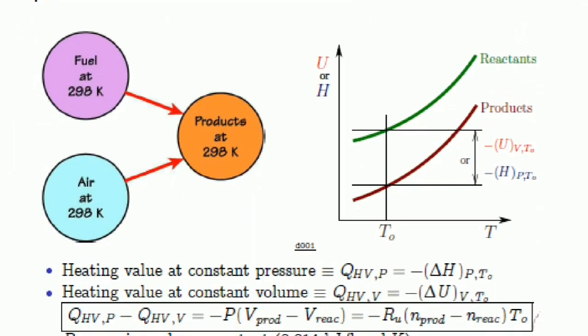Look at this picture: fuel at 298 Kelvin (violet circle), product at 298 Kelvin (brown circle), and air at 298 Kelvin (blue circle). In the right corner, there's a graph where the x-axis shows T₀ and T, and the y-axis shows U or H. You can see the green line which represents reactants and the red line which represents products.